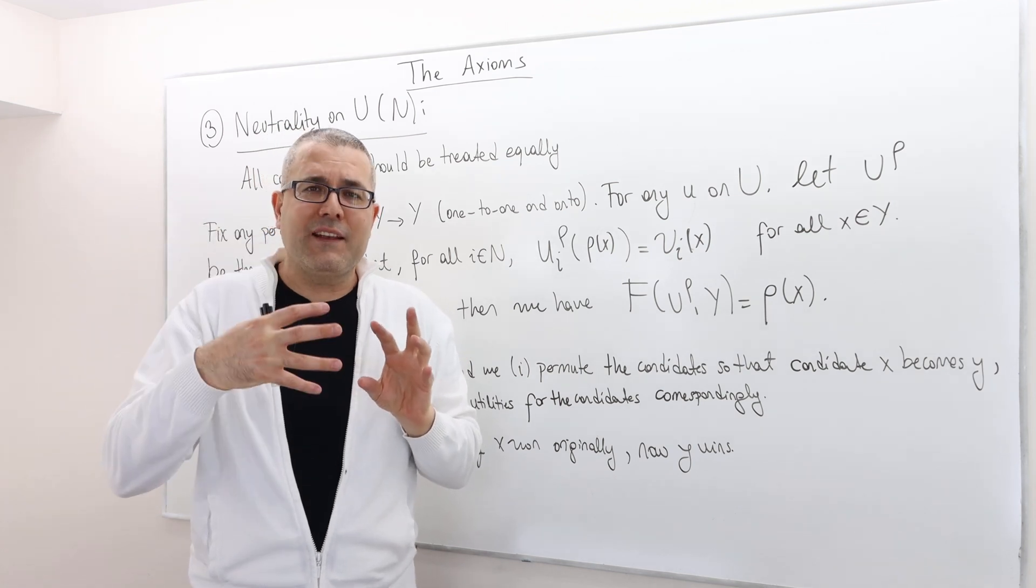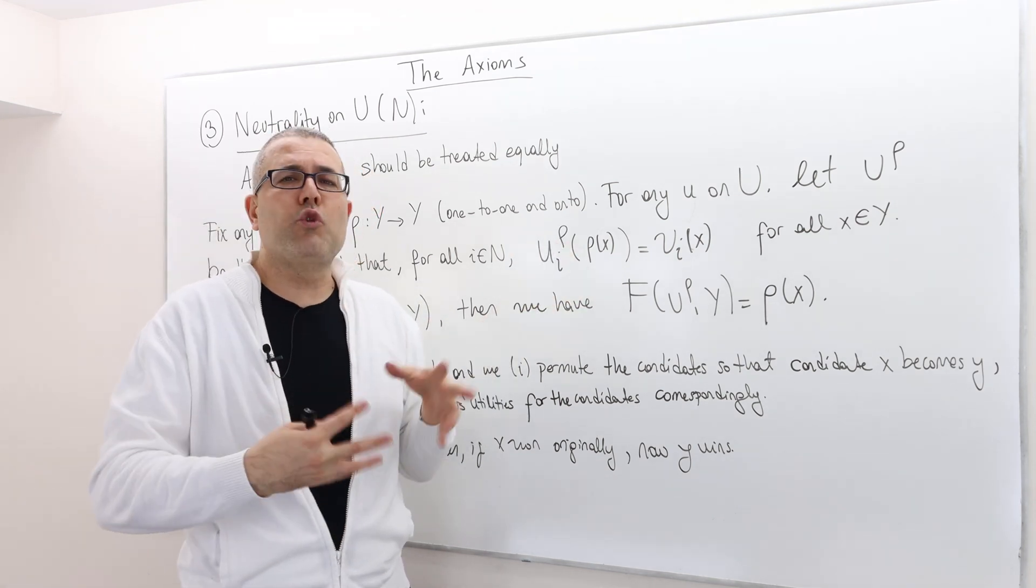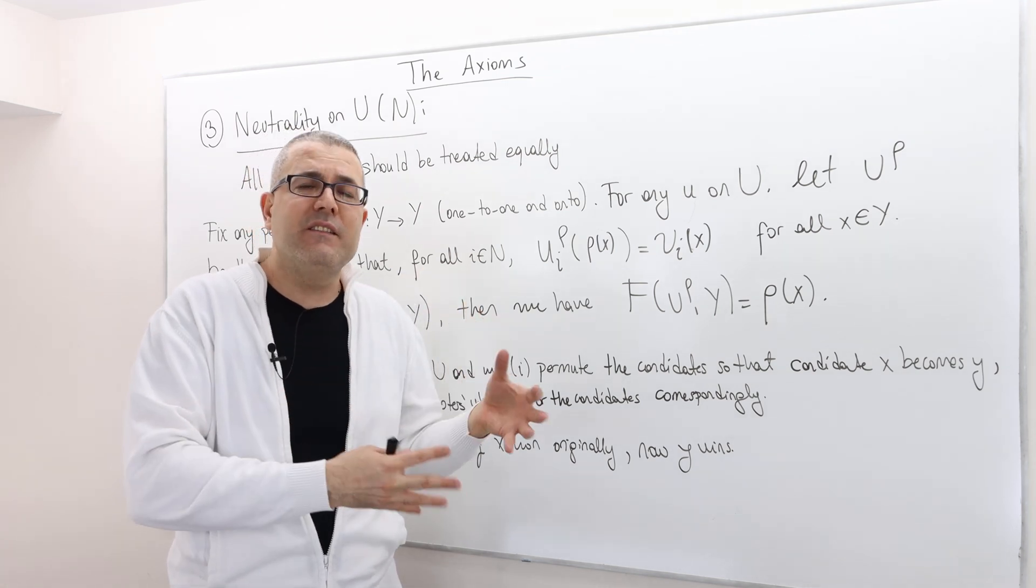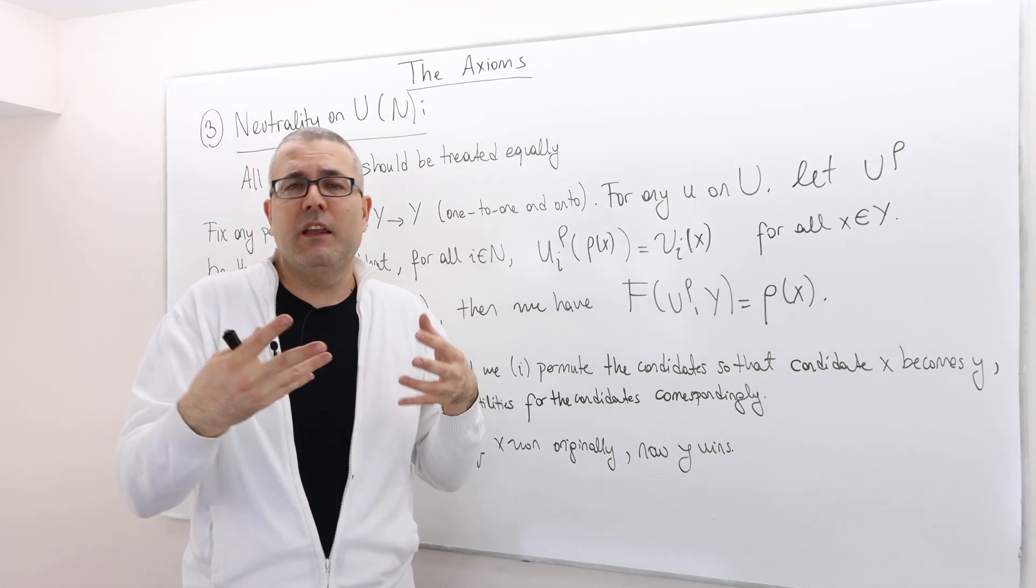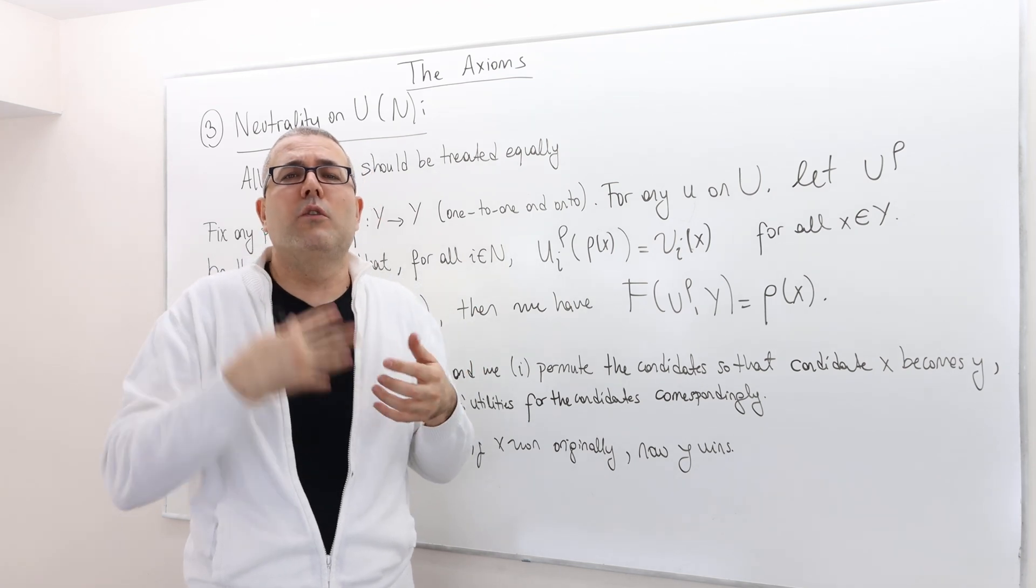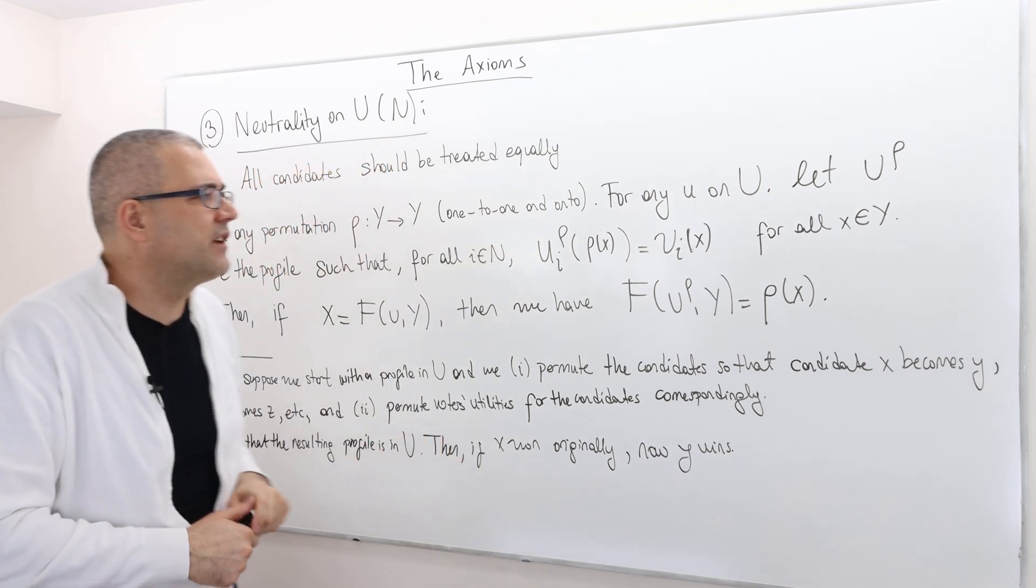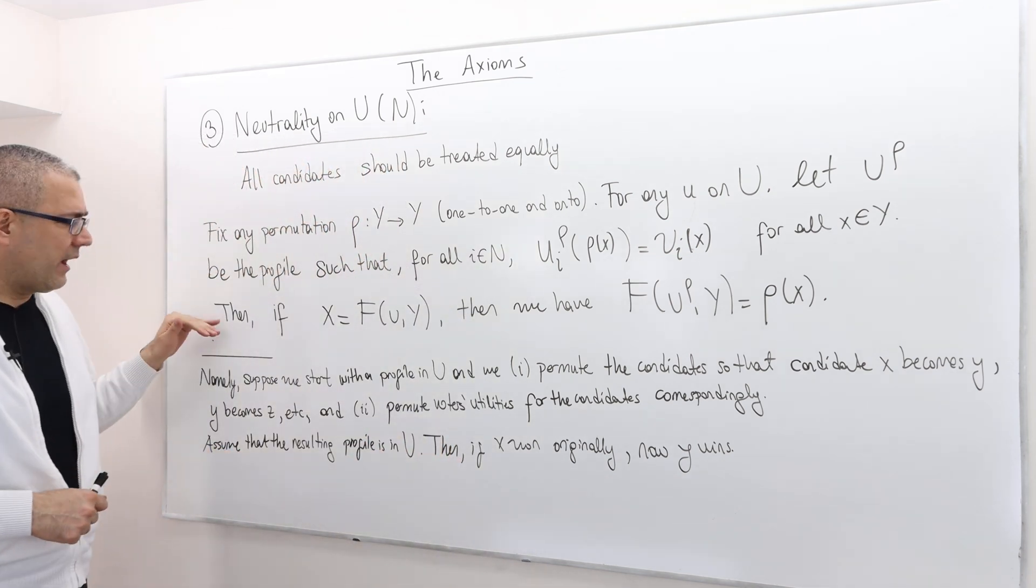So the old x now becomes rho x. And so the utility of x is identical to the utility of the same alternative, but it's just called rho of x. And this is true for any x in the set of alternatives y.